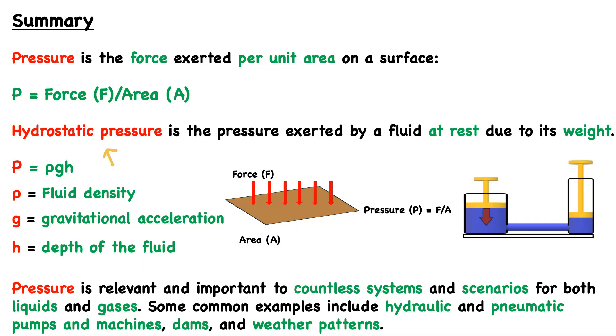Then we moved on to talk about a specific type of pressure highly relevant to fluid dynamics: hydrostatic pressure, or the pressure exerted by a fluid at rest due to its weight. We also had a formula for hydrostatic pressure, which you can see here. It is P equals ρ times g times h, where ρ is the fluid density, g is gravitational acceleration or the gravitational constant, and h is the depth.